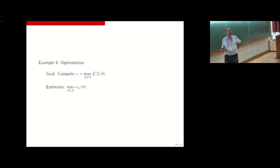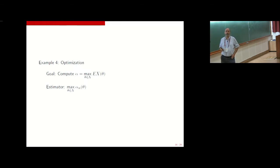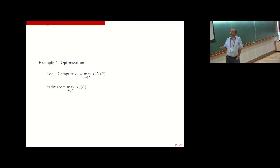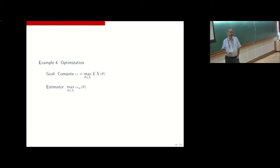This problem also arises in stochastic optimization, where we want to compute the maximum of some objective function depending on a decision variable theta over a feasible set lambda. The large-n asymptotics of this maximum can be quite complicated. In this context, variance estimation will be difficult — for example, if the optimizer sits on the interior of the space lambda, you get different central limit effects than if the optimizer is on the boundary.